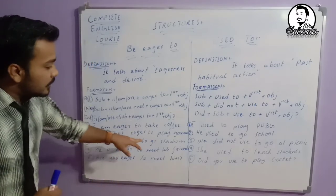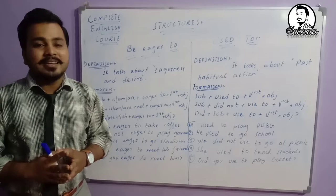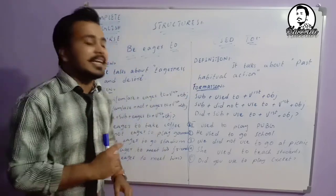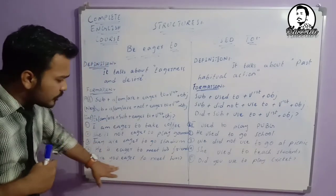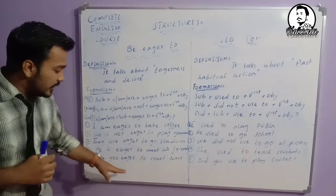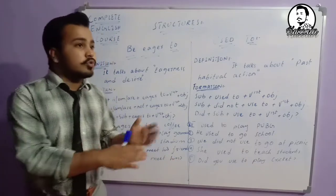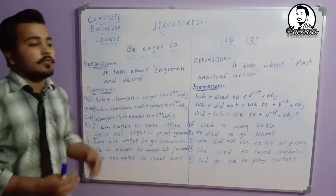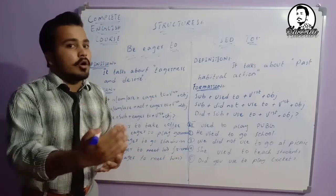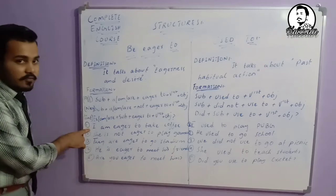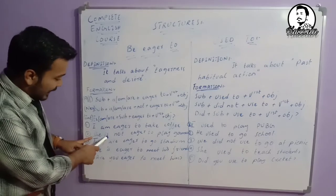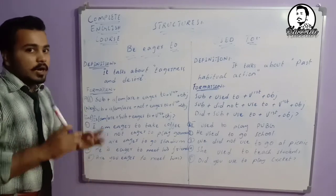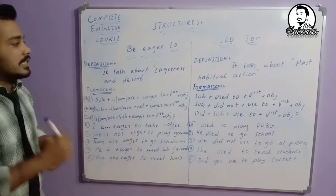Third example: 'They are eager to go to the stadium' — woh baykaraar hain stadium jane ke liye. Fourth example — interrogative: 'Are you eager to meet him?' — kya tum usse milne ke liye bekaraar ho? So we have affirmative, negative, and interrogative examples covered. You must have got the idea about this structure.